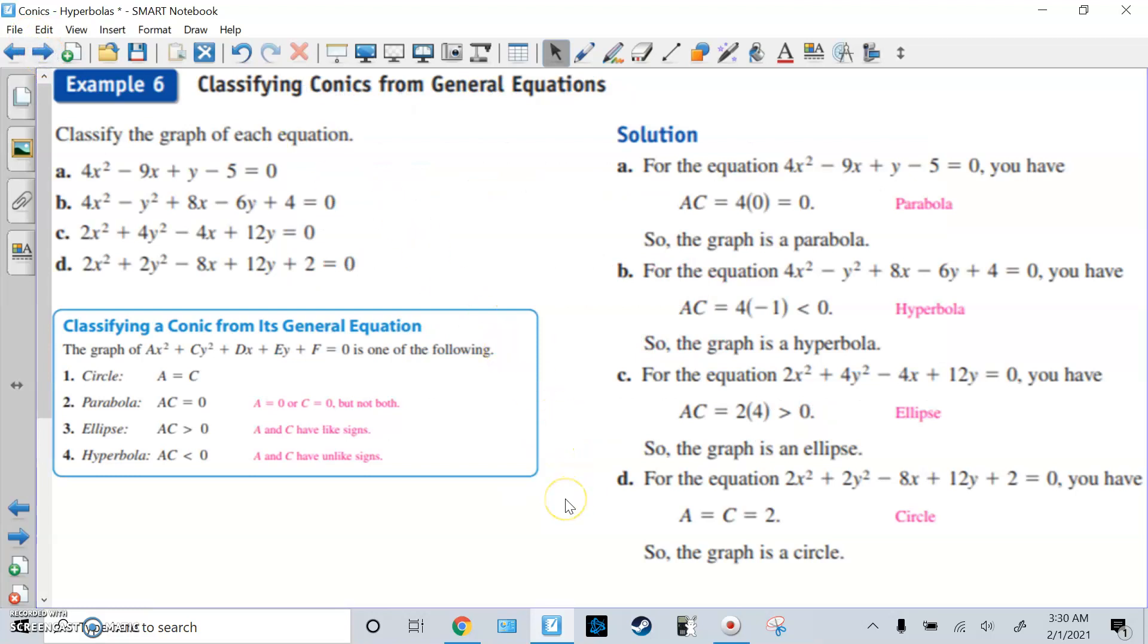So last example: classify conics from general equations. Tell me what each one of these are. And again, here's a little chart. For part a, we have 4x squared. So A is 4. We have no y squared, so C is 0. That's going to be a parabola. That's going to be a vertical parabola. But here, I'm going to use this formula. A is 4, C is 0. 4 times 0 is 0. That's why it's a parabola.